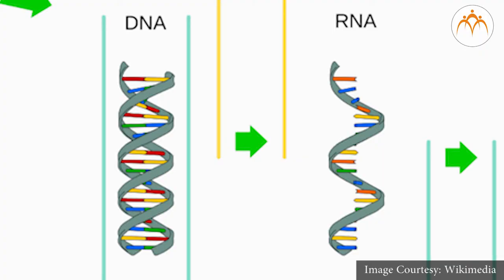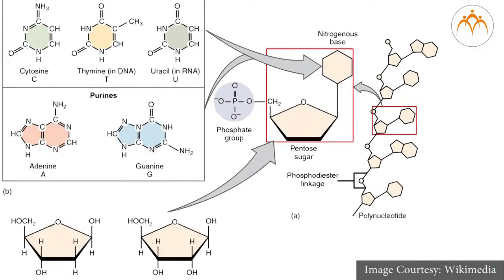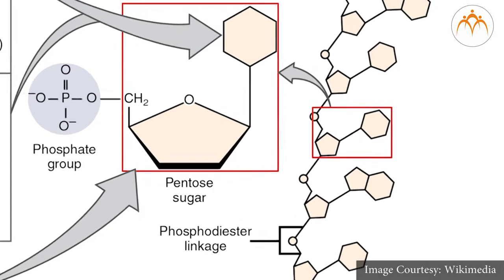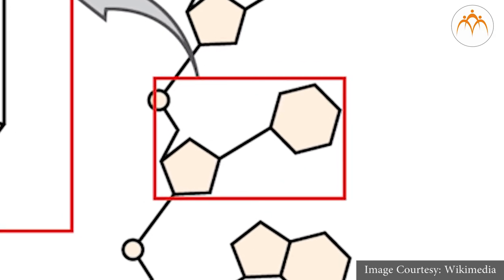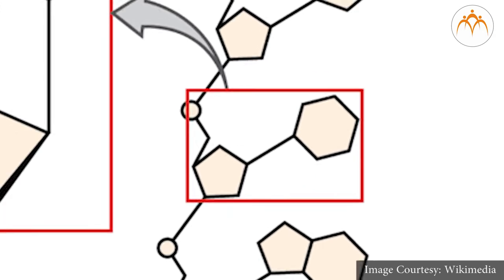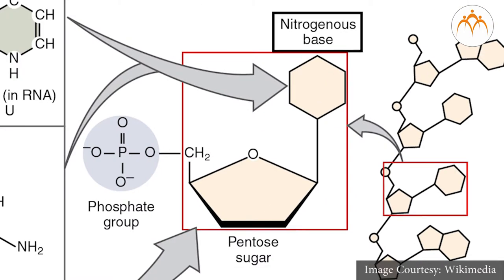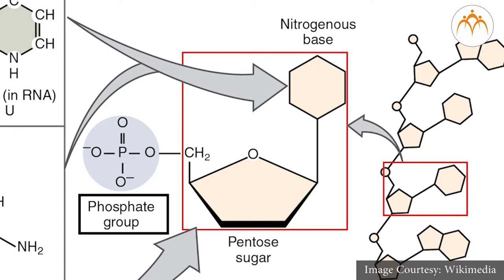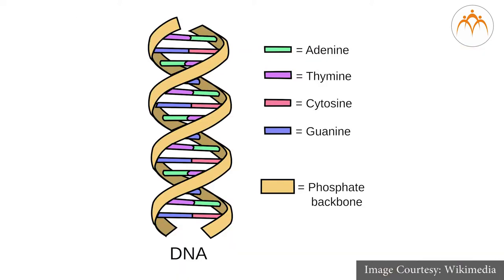DNA and RNA are very similar molecules. They are both nucleic acids, one of the four molecules of life. They are both built on a foundation of nucleotides, and they both contain four nitrogenous bases that pair up. A strand of DNA contains a chain of connecting nucleotides. Each nucleotide contains a sugar, a nitrogenous base, and a phosphate group. There is a total of four nitrogenous bases in DNA.